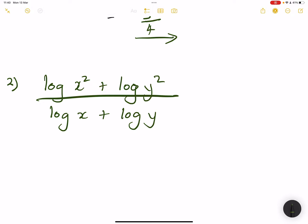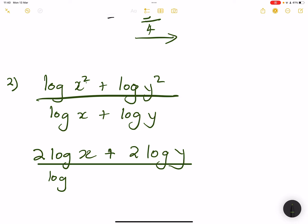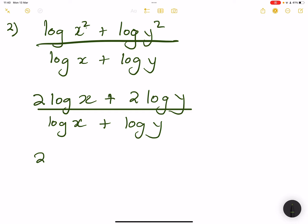Now let's have a look at it. I'm going to apply law number 3 of logs. Remember, if we've got an exponent, that simply becomes the coefficient. So this will be 2 log x plus 2 log y, divided by log x plus log y. We can take 2 out as a common factor, so this becomes 2 times the quantity log x plus log y.